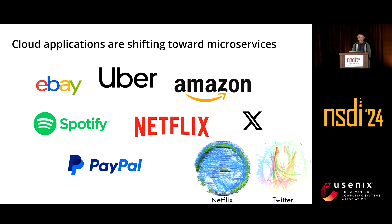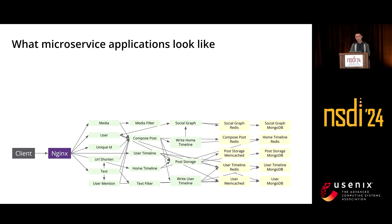More and more companies are building their cloud applications with microservices. Uber, Amazon, and Netflix are among the first companies to do this. These two graphs show the complex microservice topology in Netflix and Twitter. A microservice application consists of many small, independent, and loosely coupled services that work together to process a request from the client.